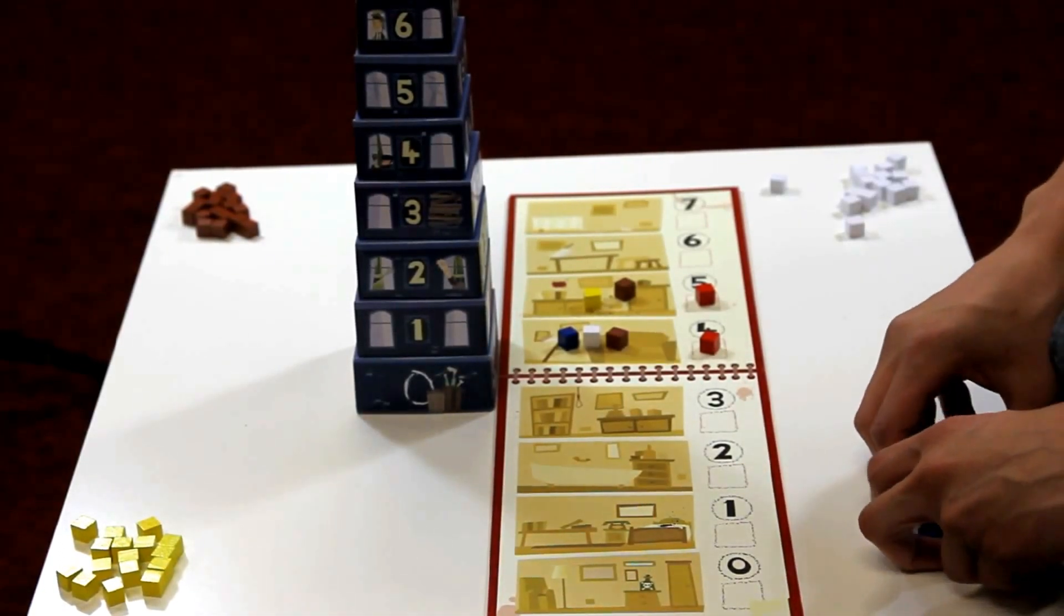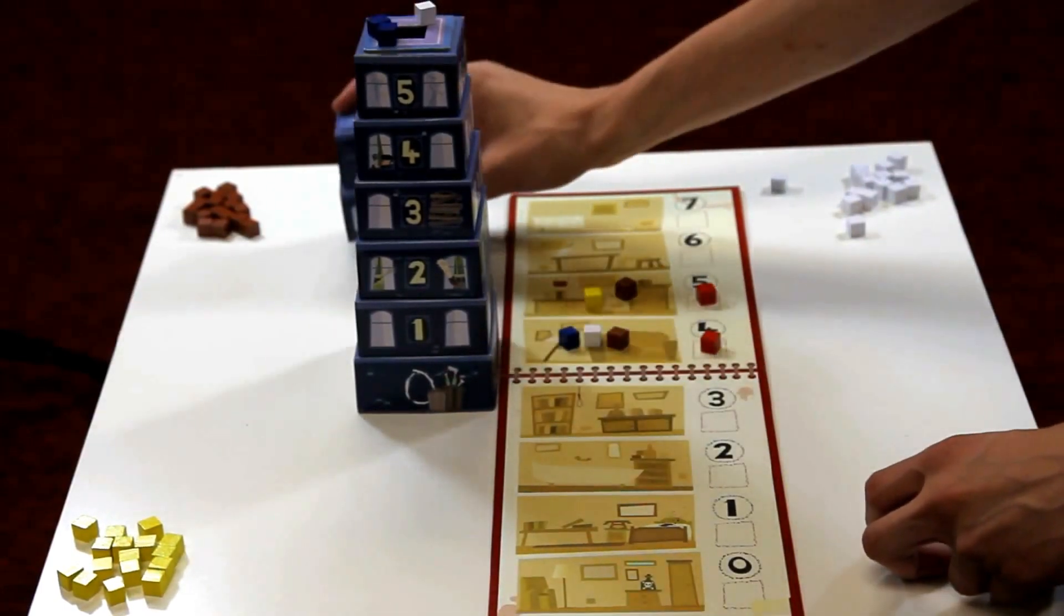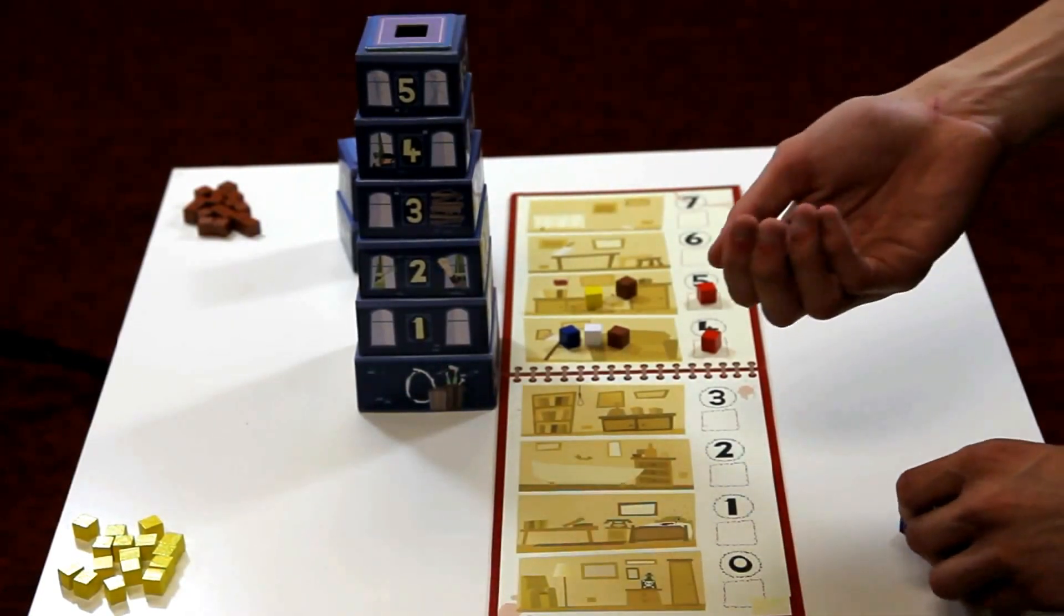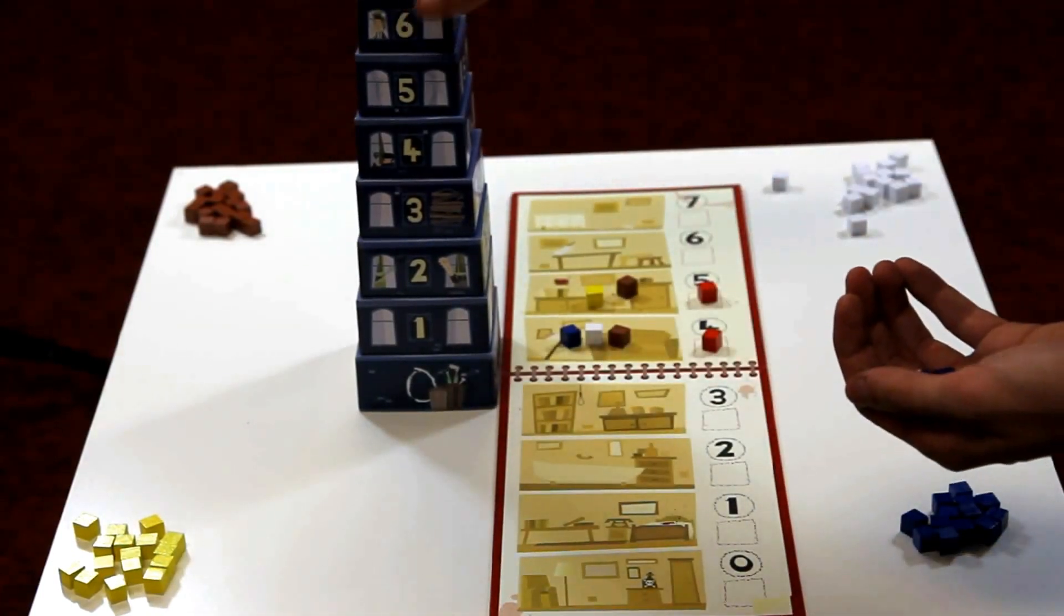The blue player goes next, accusing the brown and the yellow player of being on the sixth floor. Neither are there. The revealed cubes are re-seeded. For making two wrong guesses, the blue player must add two more cubes to the tower.